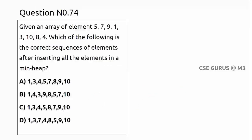Coming to question number 74: given an array of elements, which of the following is the correct sequence after inserting all elements into a min-heap? In a min-heap, all descendants must always be greater than their parent. So for any subtree, all descendants must be greater than the root of that subtree — the opposite of a max-heap.